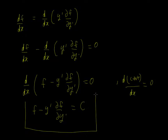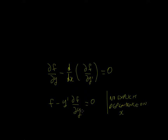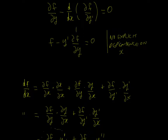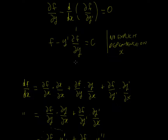Now I believe I made an error right at the beginning where I wrote zero instead of a constant. So the Beltrami identity states that f minus y' times partial f upon partial y' equals a constant — valid when there's no explicit dependence on x. For example, in the problem of a rope hanging across two pulleys, there's no explicit dependence on x, so we can use the Beltrami identity instead of the full Euler-Lagrange equation.